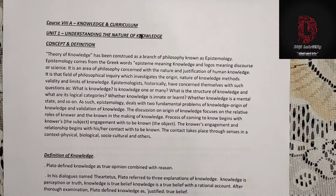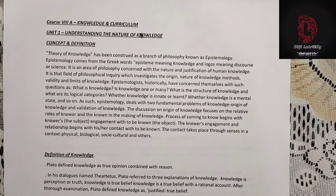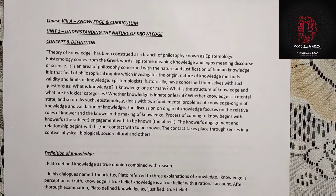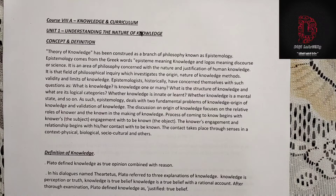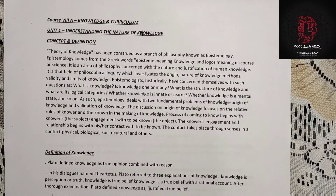Epistemology deals with two fundamental problems of knowledge: the origin of knowledge and the validation of knowledge. The discussion on origin of knowledge focuses on the relative roles of the knower and the known in the process of making knowledge. The process of coming to know begins with the knower's engagement with the object to be known. This contact takes place through senses in a physical, biological, or socio-cultural context.